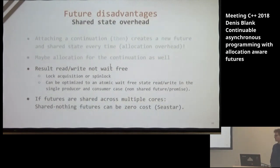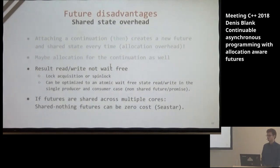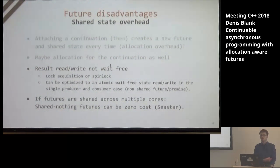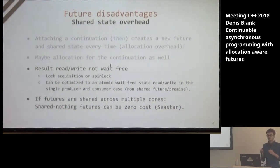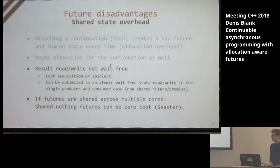There's another alternative for futures that are not shared across multiple cores — where no data races can occur. The future and promise pattern can be implemented at zero cost, and this is implemented in the C-STAR framework.